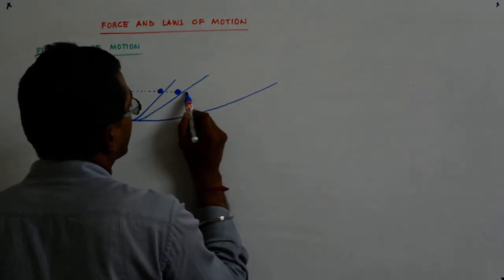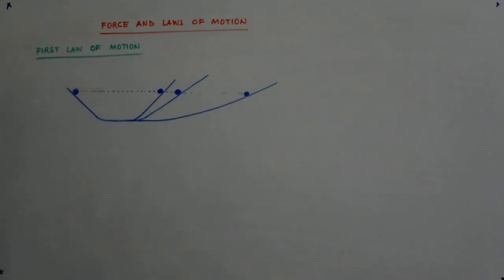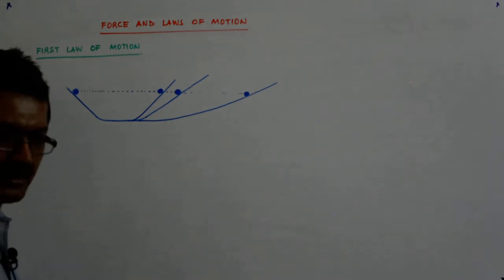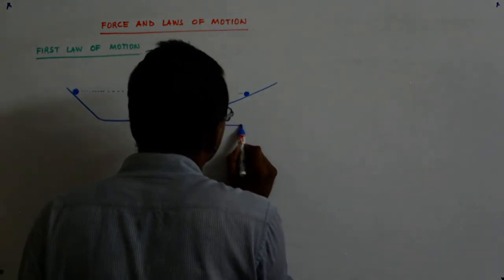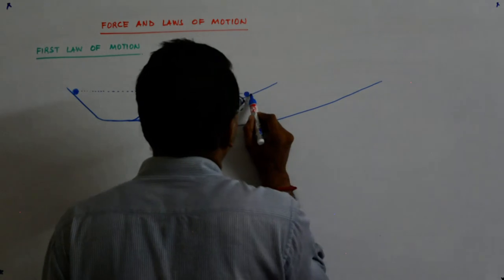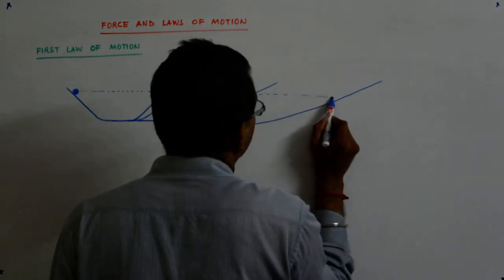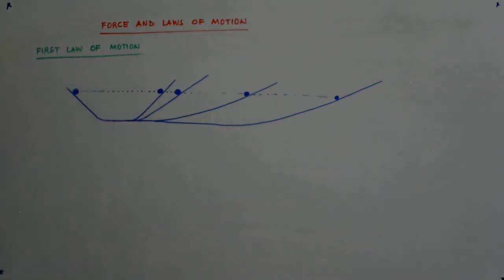So the tendency of the ball was to come to this place. Tendency was to come to this place to attain the same height. Then he made it maybe something like this. The tendency remained. The distances kept on increasing.